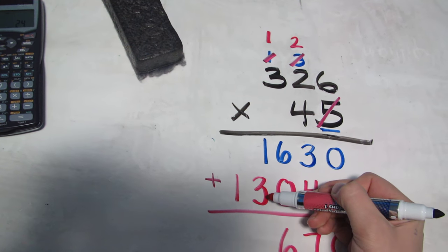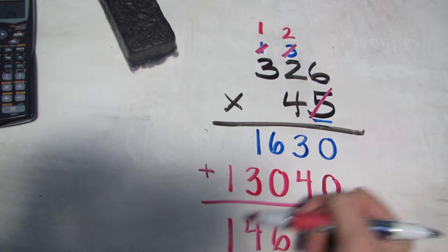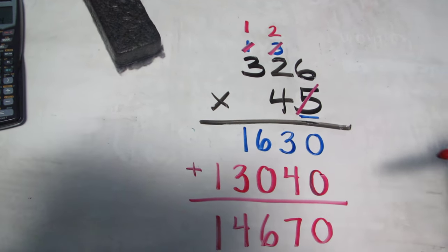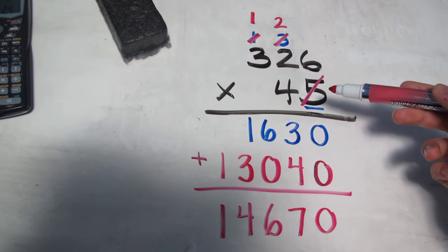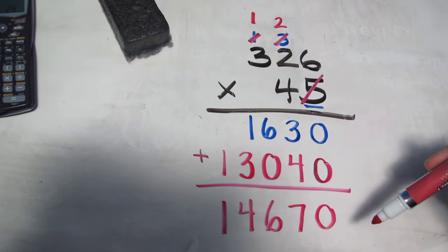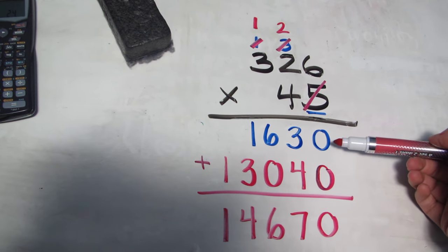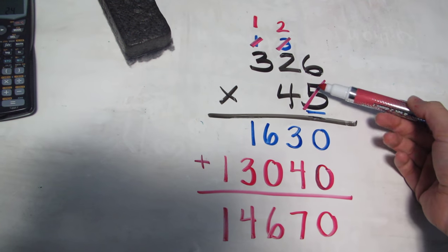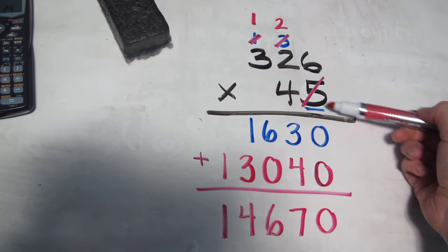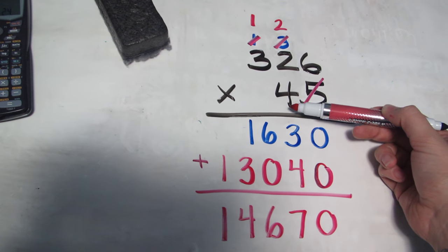6 plus 0 is 6, 1 plus 3 is 4, and I bring down the 1 and I find out that 326 times 45 is 14,670. And so again these two numbers mean that I multiplied everything in my ones place. That's this number.